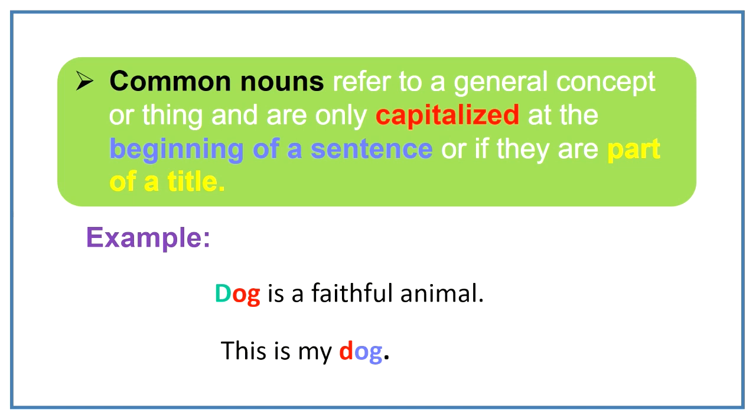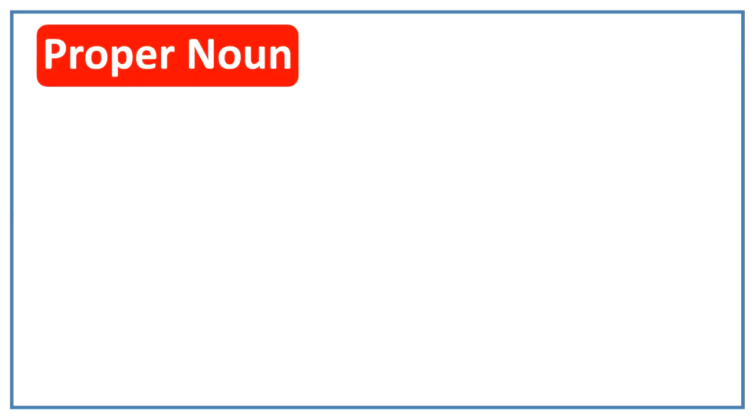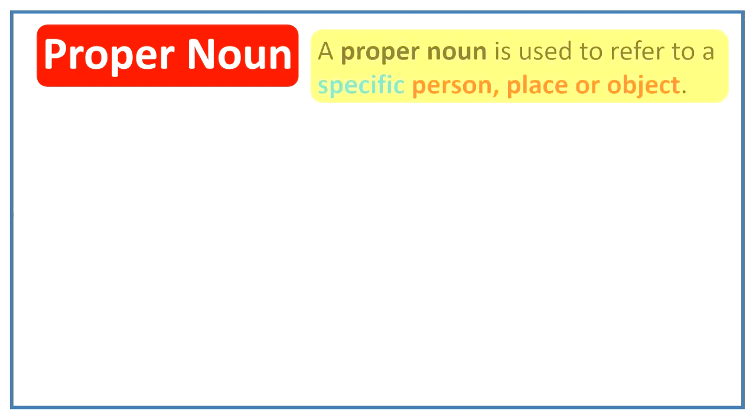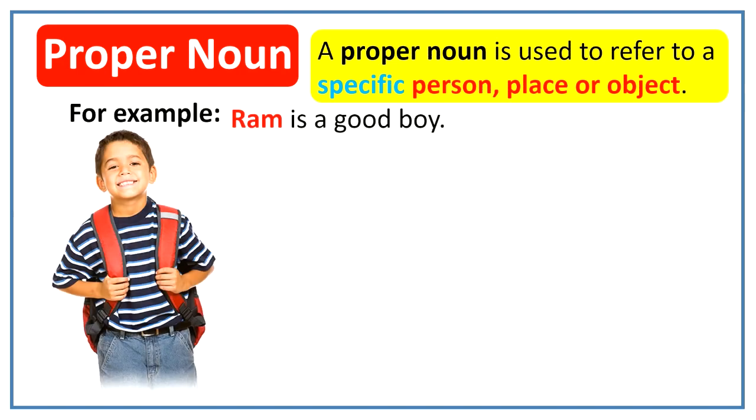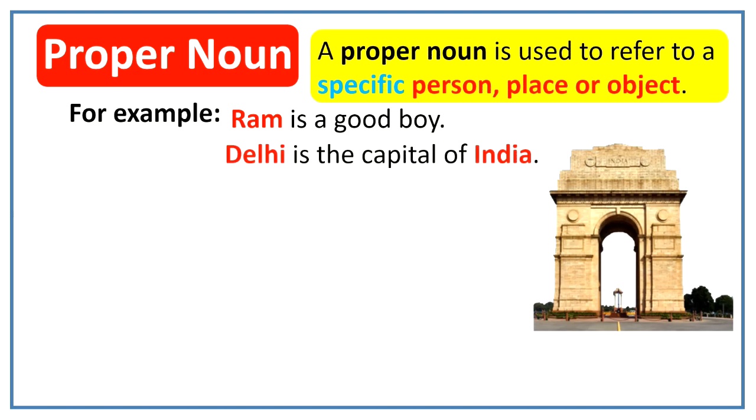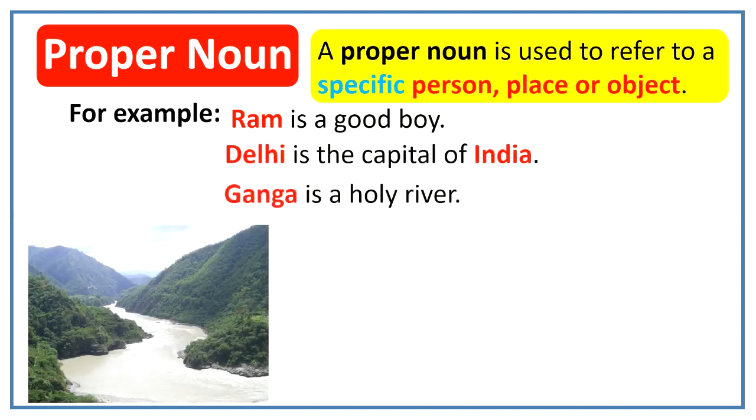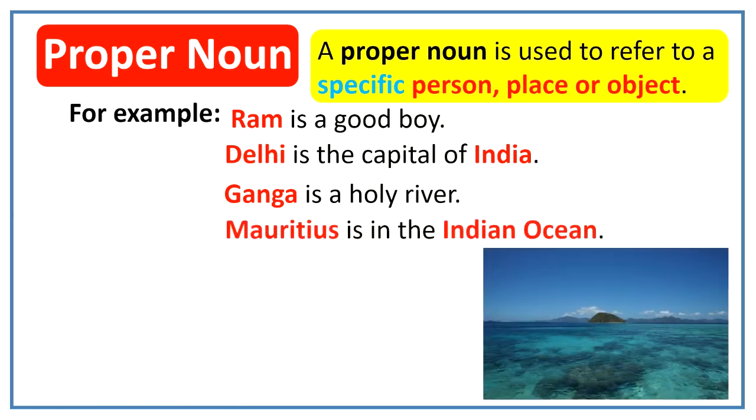What is a proper noun? A proper noun is used to refer to a specific person, place or object. For example, Ram is a good boy. Delhi is the capital of India. Ganga is a holy river. Mauritius is in the Indian Ocean.